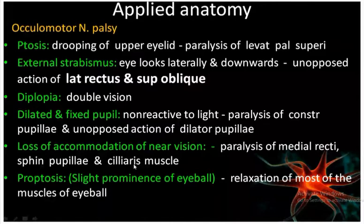Proptosis - prominence of the eyeball - occurs because most of the eye muscles are paralyzed, causing relaxation; as a result the eye comes slightly anteriorly. These are the applied aspects of the oculomotor nerve.